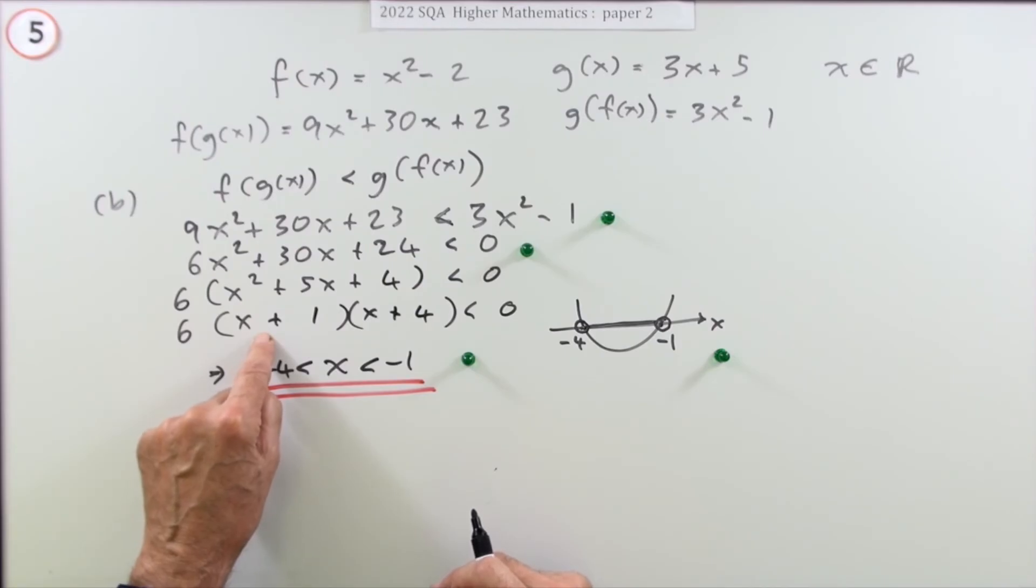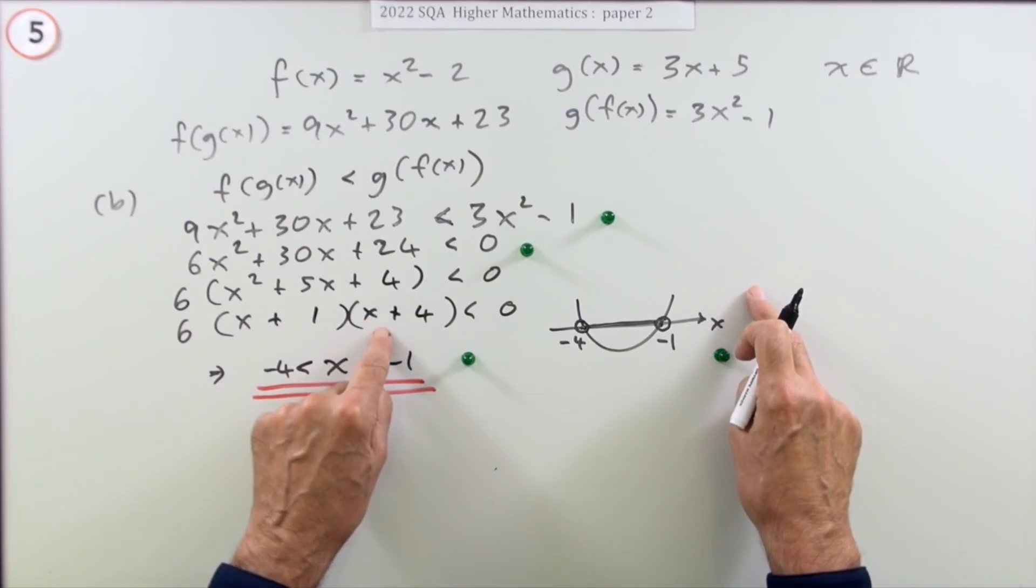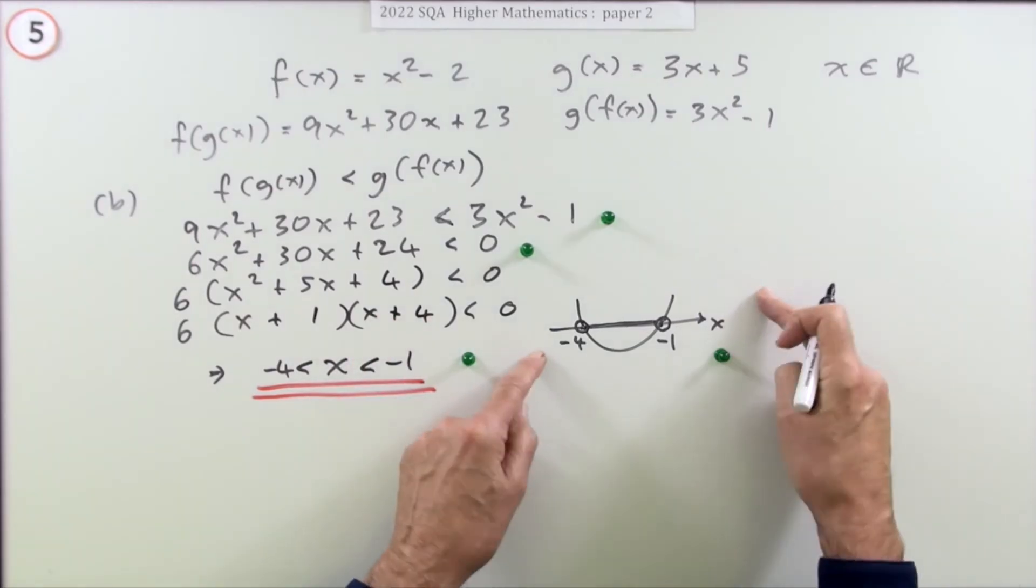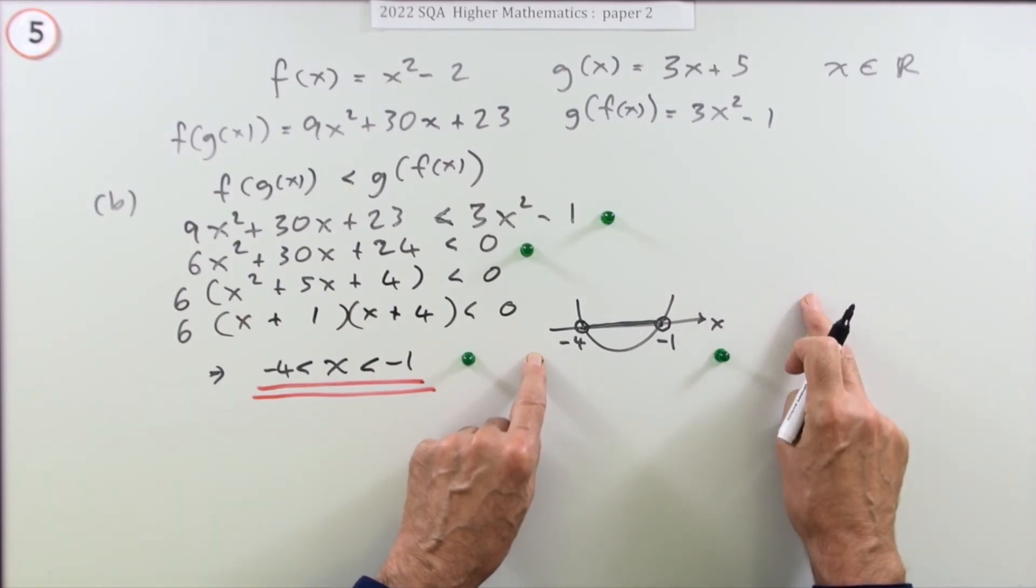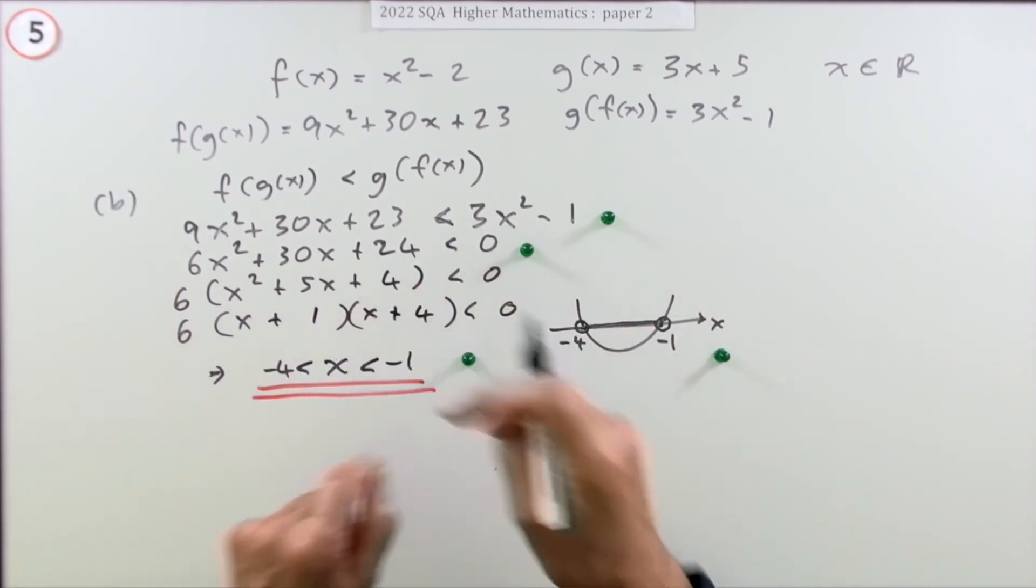If (x plus 1) is positive, x is greater than negative 1. If (x plus 4) is negative, x is less than negative 4. That has to happen simultaneously - but you can't have a number both greater than negative 1 and less than negative 4. What about the other way around?